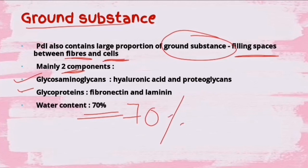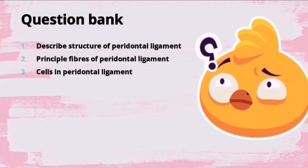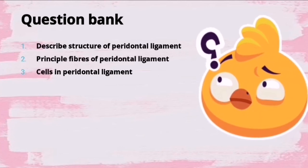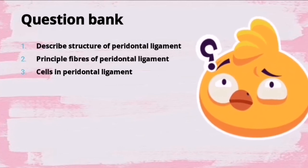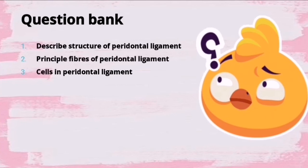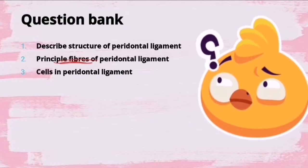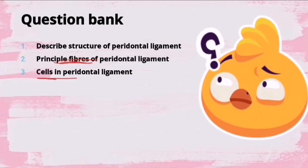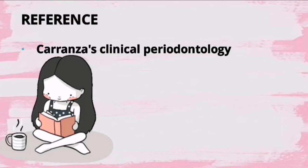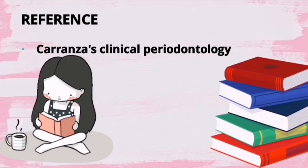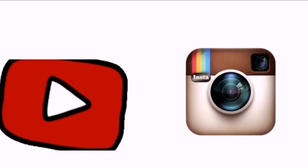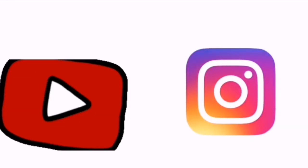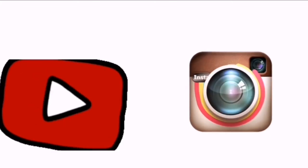That's it, friends. Hope the topic was understood. Important exam questions from this portion include: describe the structure of periodontal ligament, the principal fibers of periodontal ligament, and the cells in the periodontal ligament. Reference: Carranza's Clinical Periodontology. If you found the video informative, please like, share, comment, and subscribe to our channel. You can also follow us on Instagram at Dental School.